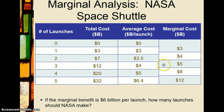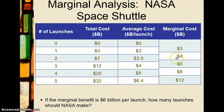The marginal cost of the first launch is three billion dollars — total cost goes from zero to three billion. From one launch to two, total cost increases from three billion to seven billion, so marginal cost is four billion. From two to three, cost increases from seven to twelve billion — a marginal cost of five billion. From three to four, cost goes from twelve to twenty billion — an eight billion dollar marginal cost.